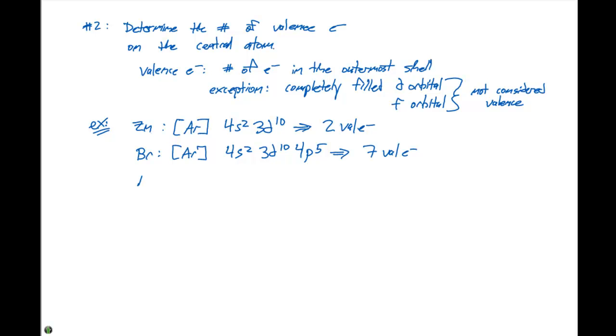If we look at a nitrogen atom, it has a helium noble gas core. Its electron configuration is 2s2, 2p3 and it will have five valence electrons.